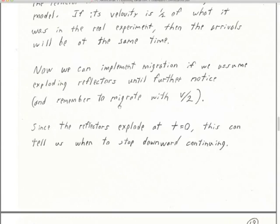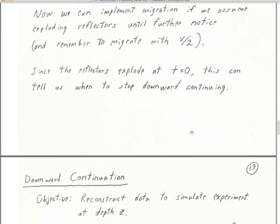We're going to assume exploding reflectors until further notice. We're also going to have to remember to migrate with v over two. In Claerbout's book and in some of the codes, that's not always clear — sometimes you just use a velocity and haven't divided it by two. Watch out for that. Very often I'll show you just a v here and it's the half velocity.